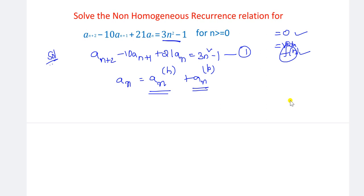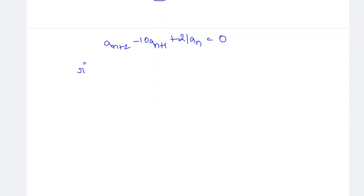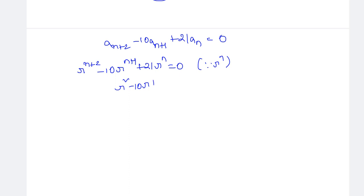What is the homogeneous recurrence relation here? To obtain An^(h), we substitute the right-hand side equal to zero. So: a(n+2) minus 10·a(n+1) plus 21·a(n) equals zero. Convert into the R form: R^(n+2) minus 10·R^(n+1) plus 21·R^n equals zero. Divide by the smallest term R^n, and we get the characteristic equation: R² minus 10R plus 21 equals zero.